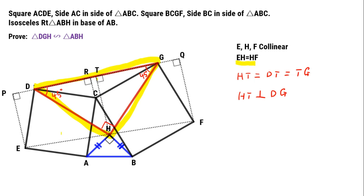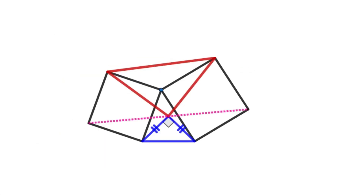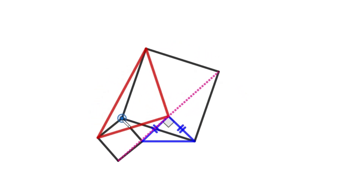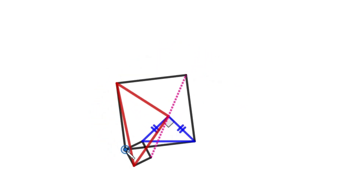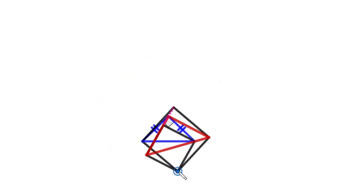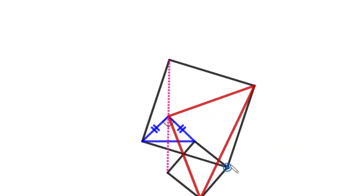We get the result: triangle DGH is similar to triangle ABH. Whatever the size of triangle ABC, triangle DGH is always similar to triangle ABH.